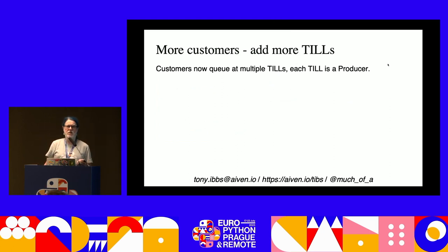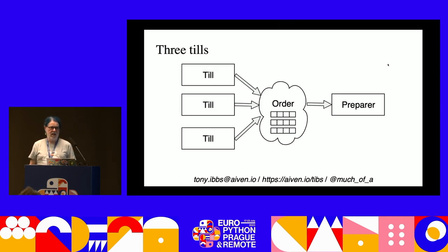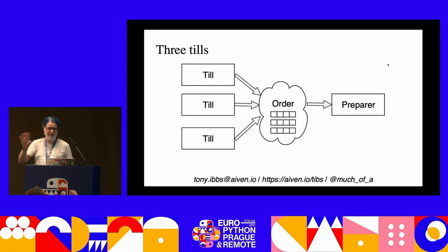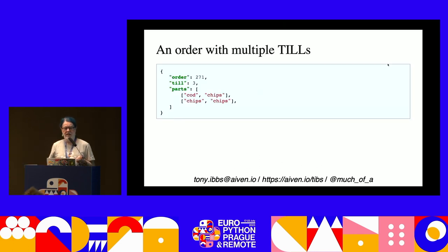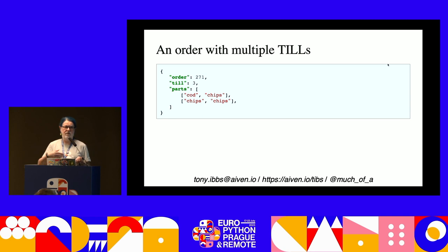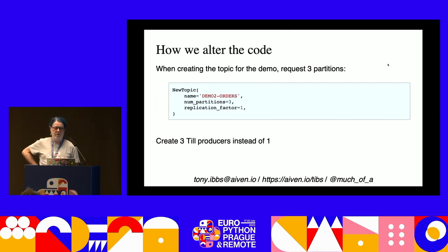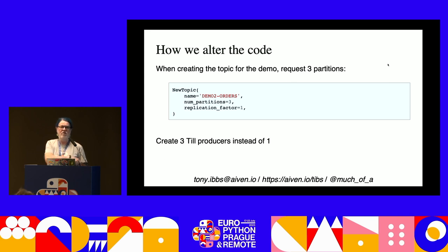We get busier and have more customers - traditionally you'd add more tills. We're going to add three producers and three partitions, so each till sends to a separate partition. The food preparer reads from all of them and gets things interleaved nicely. We add a till field to the JSON so we can keep a record of which till the order is coming from - not particularly useful to the food preparer immediately, but useful later for auditing. In the code we just specify three partitions when creating the topic and create three producer instances instead of one.